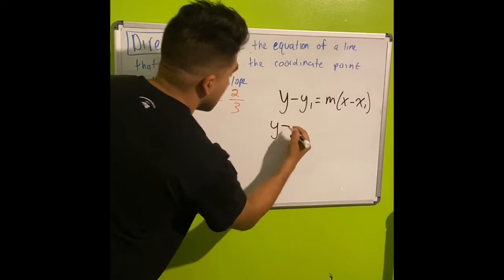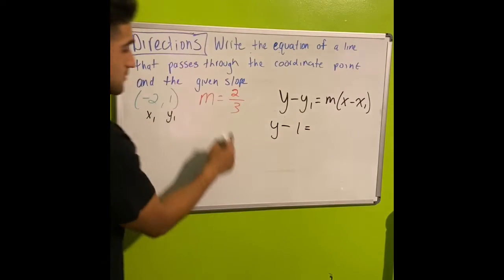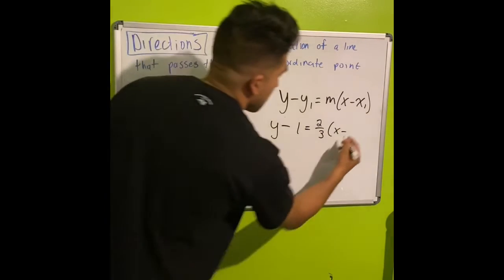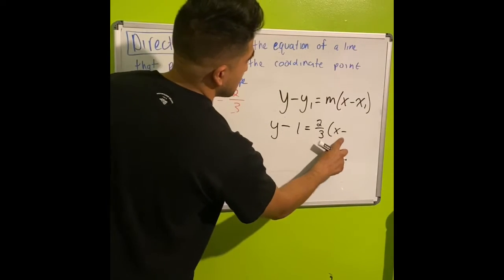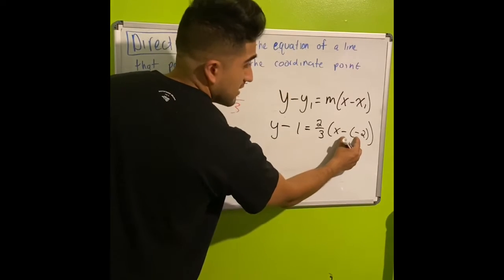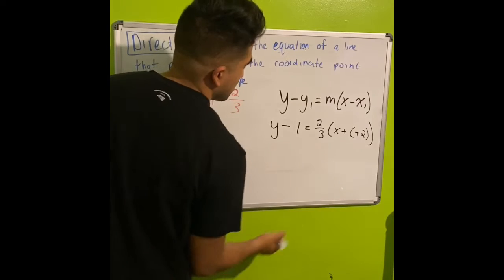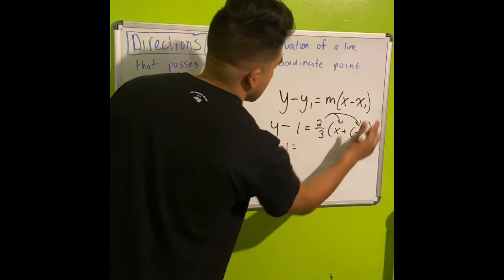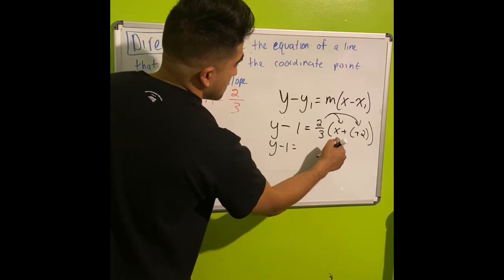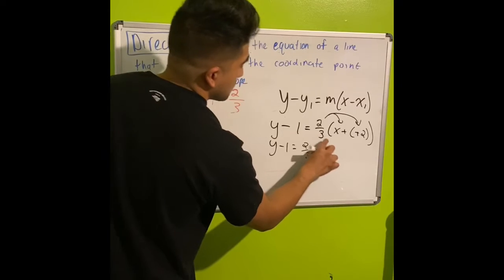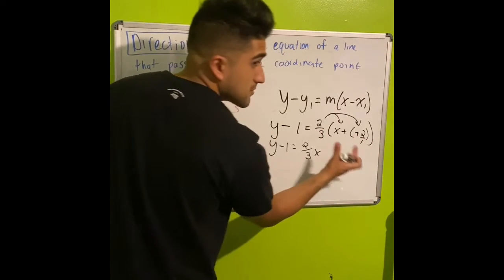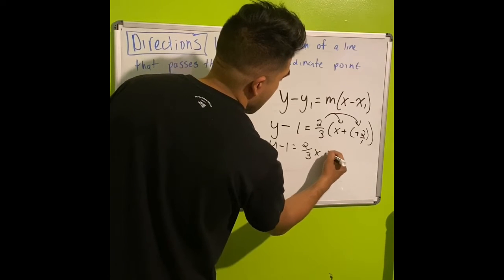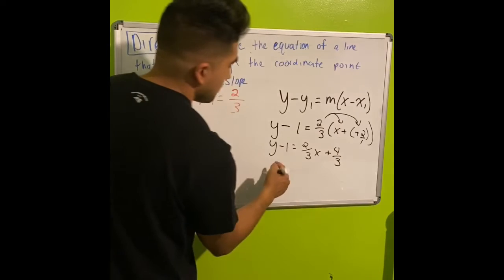Substituting into the point-slope formula: y minus 1 equals 2/3 times the quantity x minus (-2). Be careful here — x minus negative 2 is a double negative, which becomes x plus 2. Distributing 2/3 into each term inside the parentheses gives 2/3 times x, and 2/3 times 2. Multiplying the fraction: 2 times 2 is 4 and 3 times 1 is 3, giving 4/3.